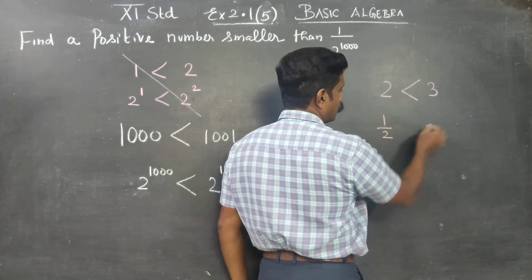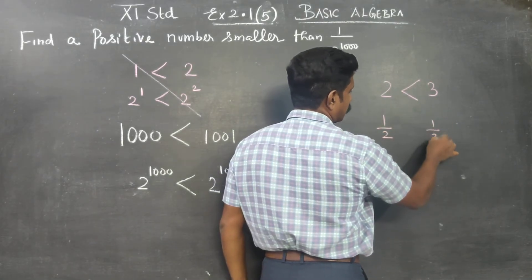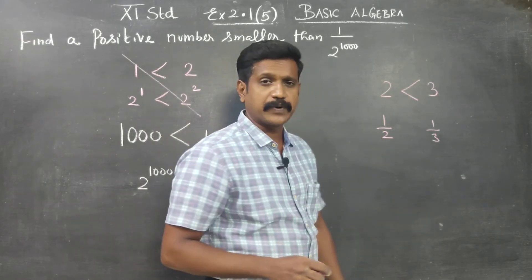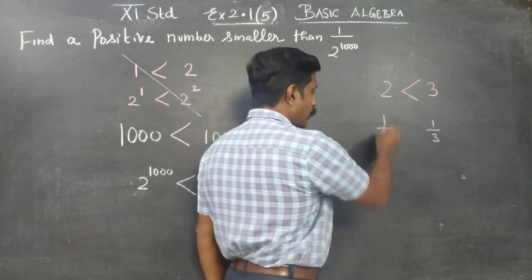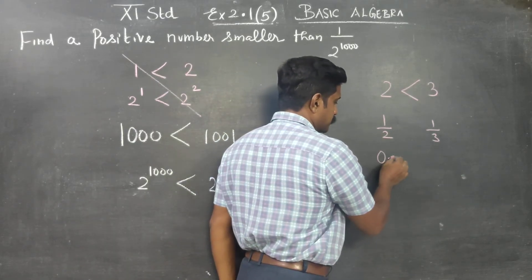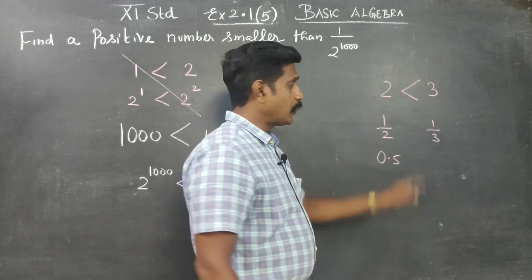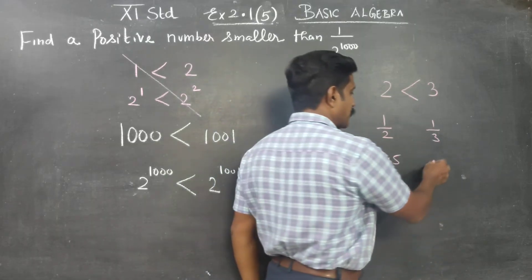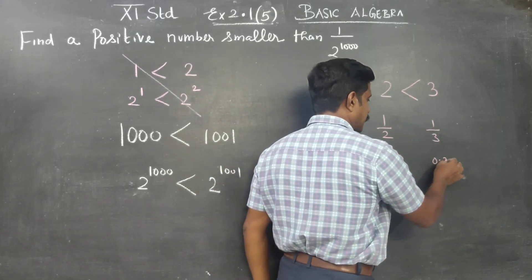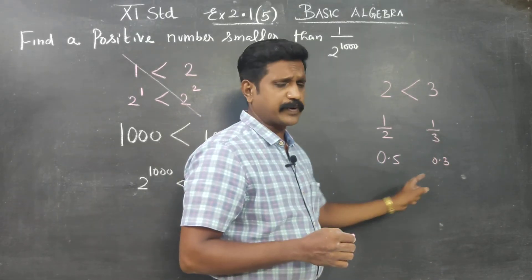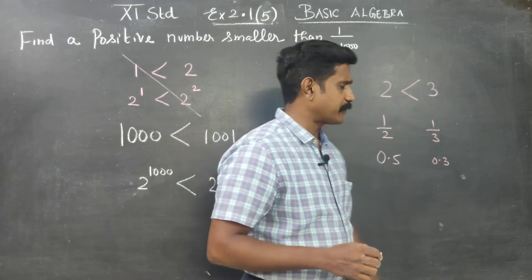1 by 2, 1 by 3 — if we take the reciprocal: 1 by 2 becomes 0.5, 1 by 3 becomes 0.333. Which is bigger and which is smaller?